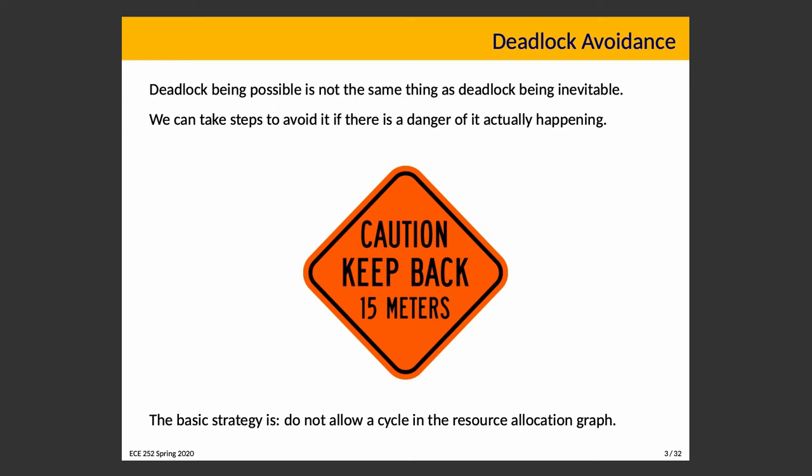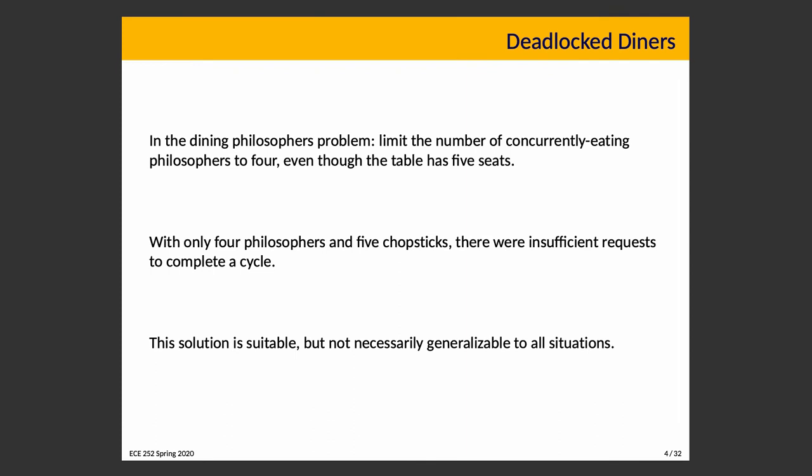The goal to stay out of trouble means keeping in mind a resource allocation graph. You don't necessarily have to draw it, but we just have to prevent the state of the system from being such that, if you drew a resource allocation graph, it would show a cycle. In the dining philosophers problem, one strategy was to hire a bouncer and prevent philosophers from sitting at the table — limiting it to four even though there are five seats. With four philosophers and five chopsticks, there are insufficient requests to form a cycle.